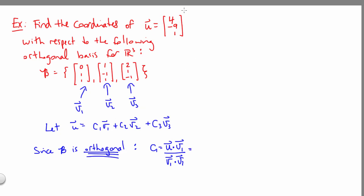So the dot product of u with v1 gives us negative 8, divided by the dot product of v1 with itself, which gives us 2. That tells us that the first coefficient is negative 4.